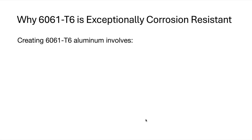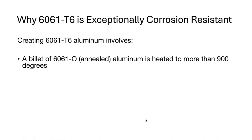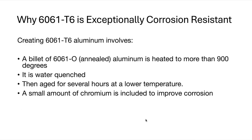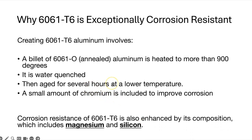Why is 6061-T6 exceptionally corrosion resistant? It comes down to how the alloy is created. Starting from a billet of aluminum in its annealed (O) condition, the aluminum is heated to over 900 degrees, then water-quenched, then aged for several hours at a lower temperature. A small amount of chromium is included to improve corrosion resistance. Its composition also includes magnesium and silicon. Unlike 2024, which has intermetallic particles that become more corrosive when exposed to air, 6061 does not have that issue.